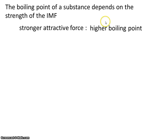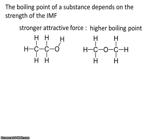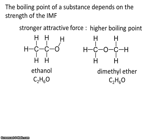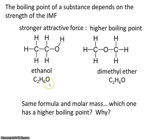Let's take a look at an example. Here we have ethanol, and this is an ether. Notice that both of them, ethanol and ether, have the same formula: C2H6O. So they have the same formula and molar mass. Which one of these has a higher boiling point and why? Why don't you pause the video now and answer that question on your own?